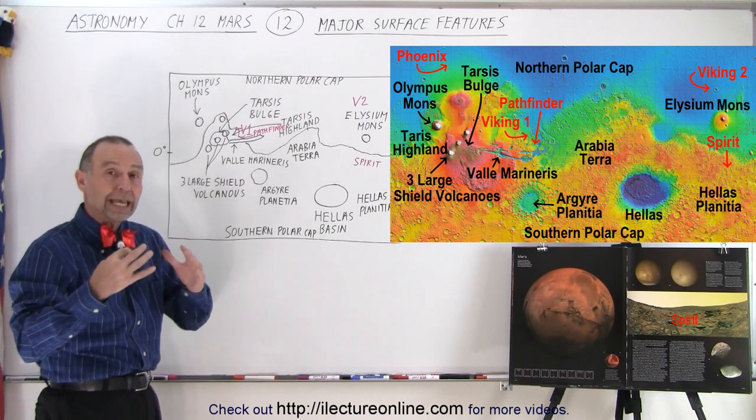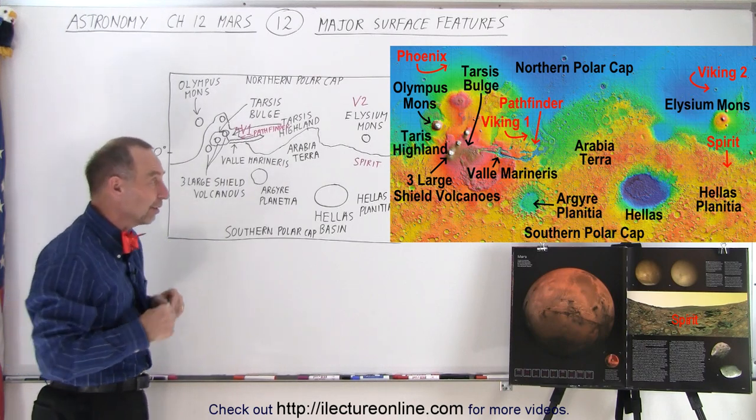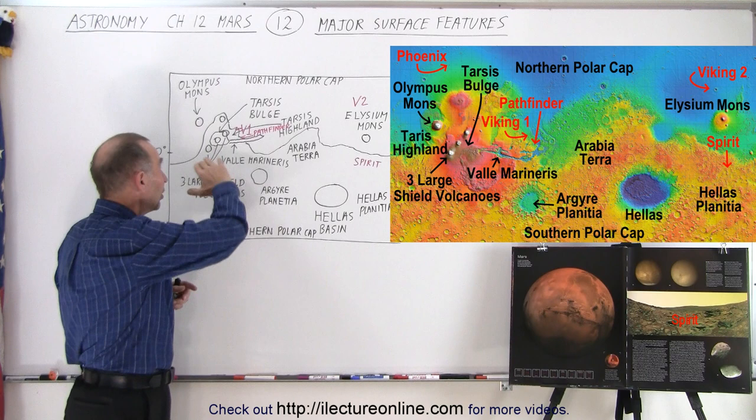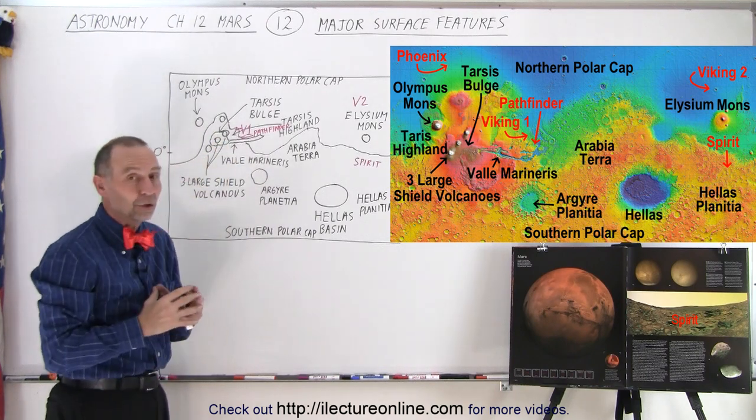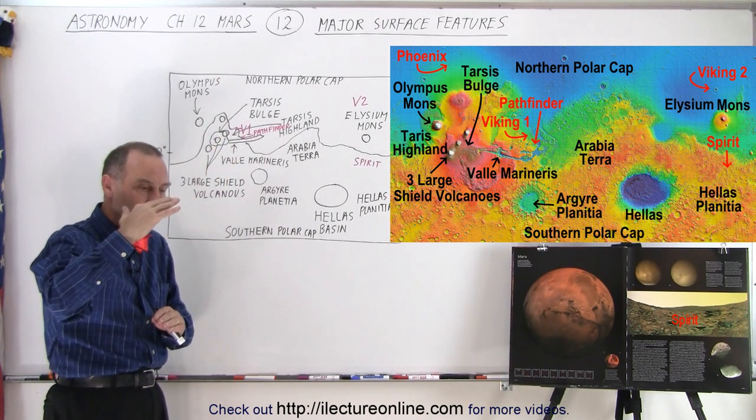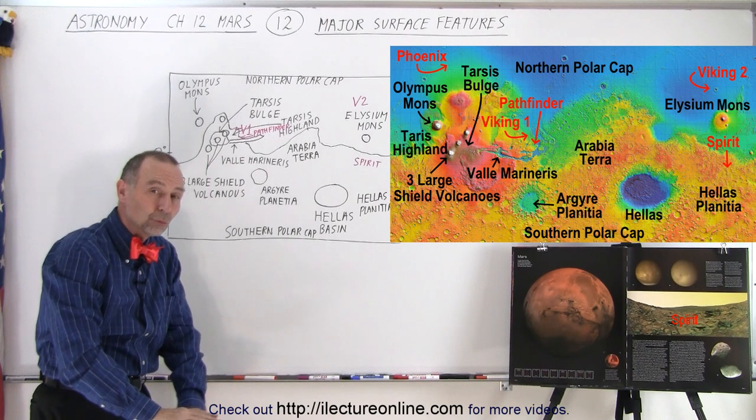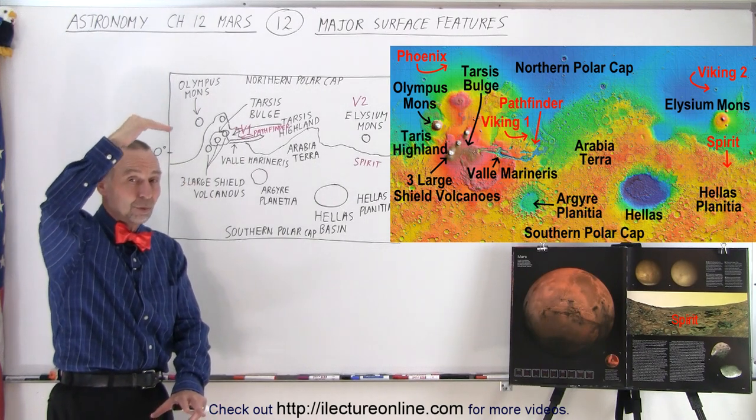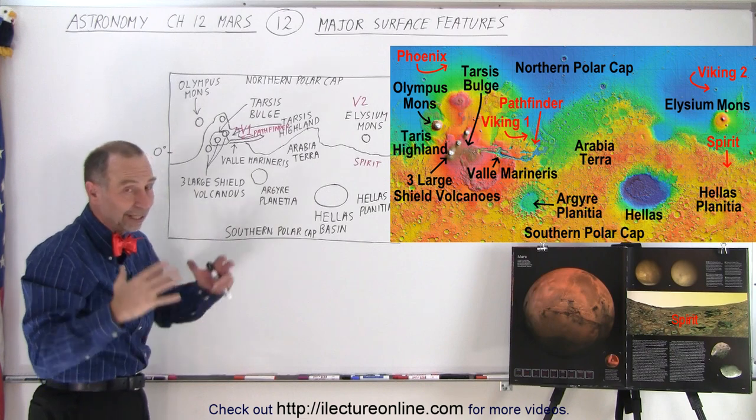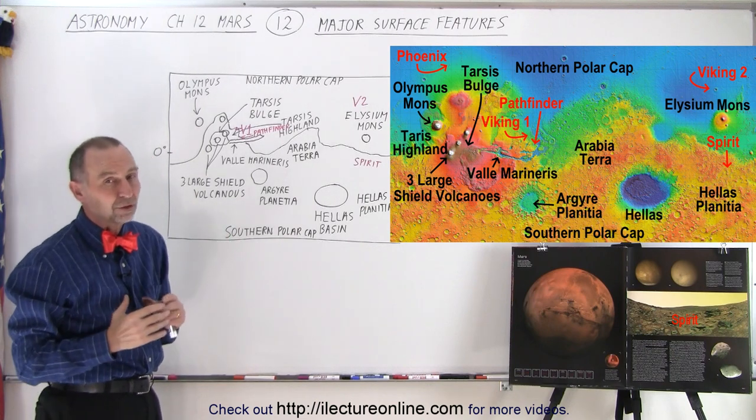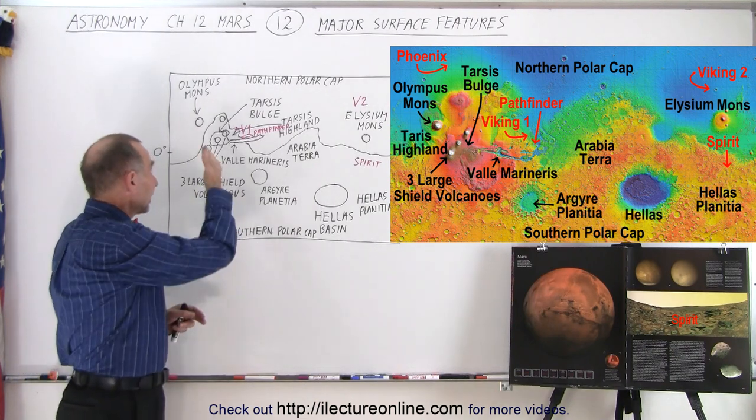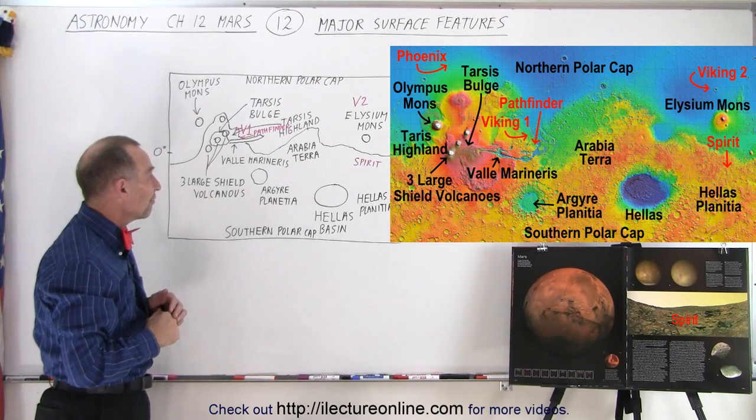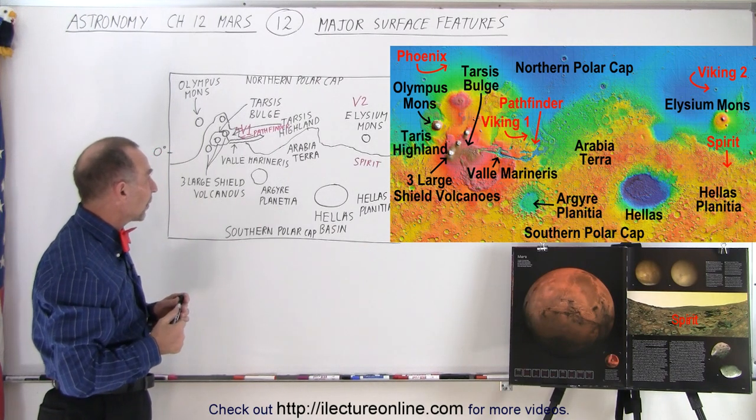Now, Mauna Kea, the volcano, the large volcano on the large island of Hawaii, is very similar to these large shield volcanoes because when you measure the height from the very bottom of the ocean where the volcano starts all the way to the very top of the mountain, which is 14,000 feet above sea level, that is a huge mountain as well. So it's not unlike the kind of mountains, the kind of volcanoes that we find on Mars.